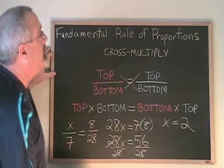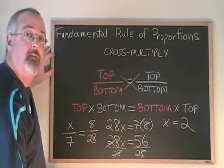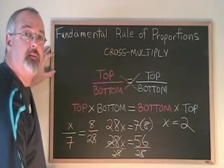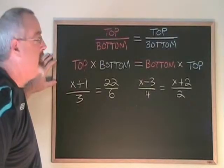So, the fundamental rule of proportions simply means cross multiply. Top times bottom equals bottom times top. Now, let's look at some other examples.